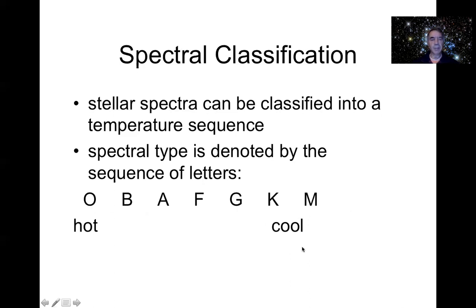Another little bit of notation that you might hear or see in textbooks: these are referred to as early type - early in the sequence I guess - and the cool ones are referred to as late type. So you hear the phrase early type star or late type star, which is just another way of saying hot or cool.